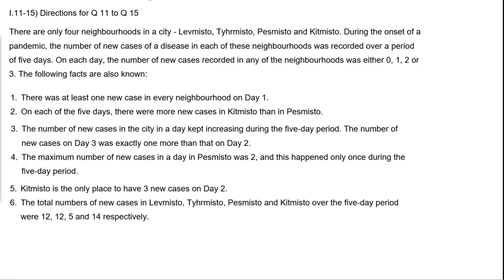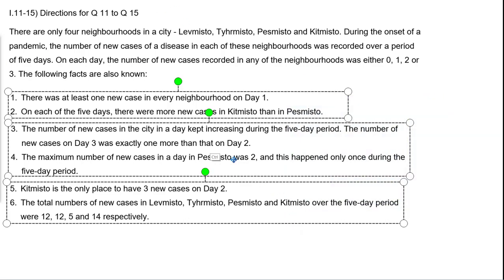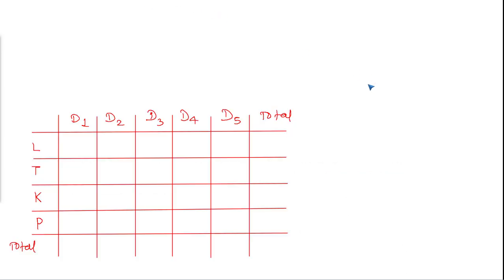If you read these six statements, what you come to know is we need to make a table. Let me show you — we need to make a table like this. So which data do we know already? The number of new cases on each day in each locality is either 0, 1, 2 or 3.